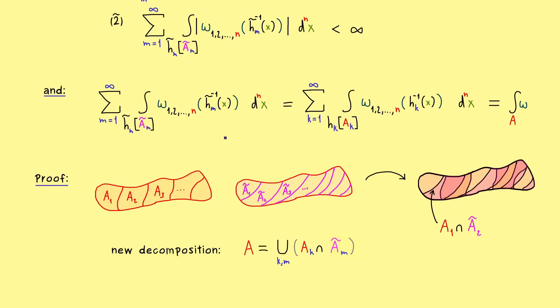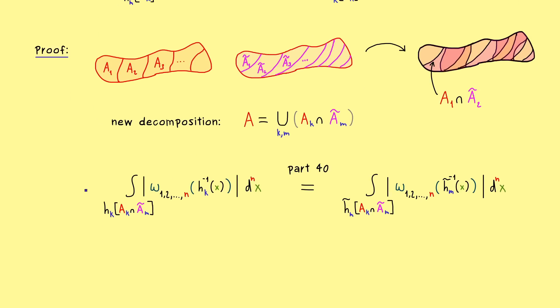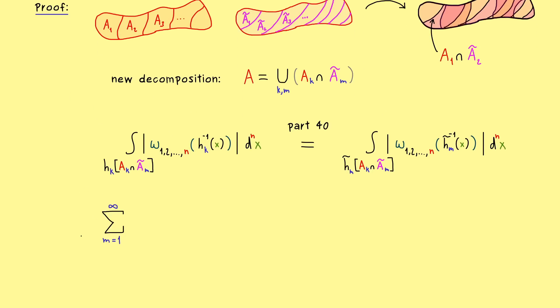Hence, for the single integral, we can immediately write down the equality. So here on the left we have the integral in Rn with respect to Hk, and on the right hand side we have the integral in Rn with respect to H tilde M. In other words, it's the same integral, just with respect to a different chart. And there we have shown in part 40 that the value of the integral is the same no matter which chart we choose. And of course the same proof holds if we consider the absolute value of our component function here. And now you should already see, what we have to do for the rest of the proof is just to sum up all these values. So let's start using the sum with the index M.